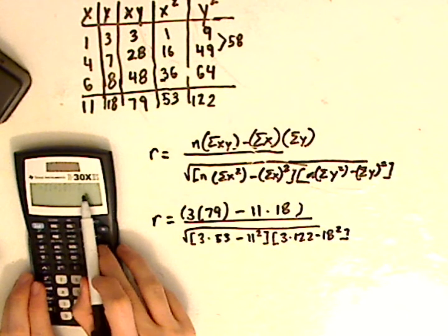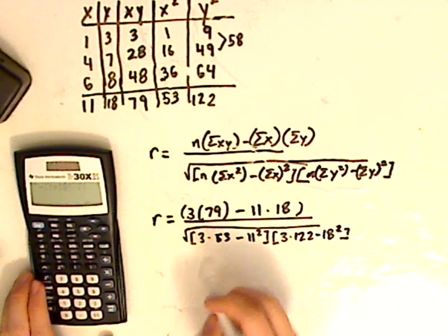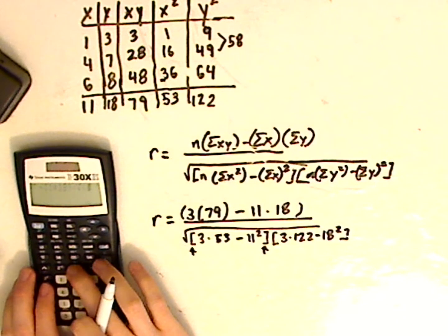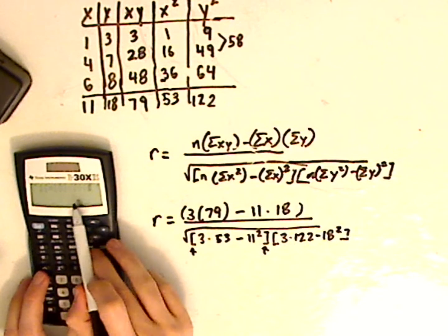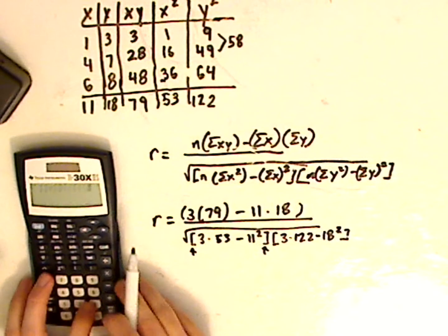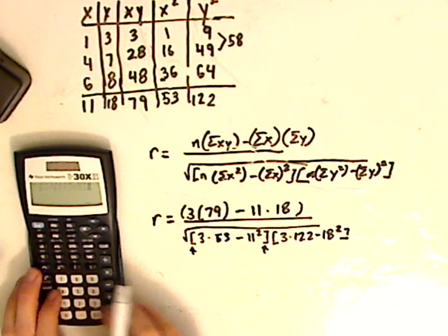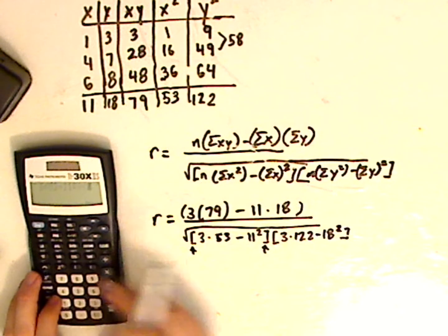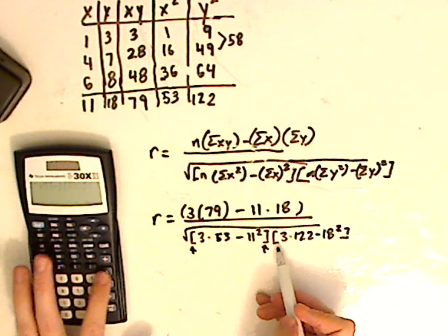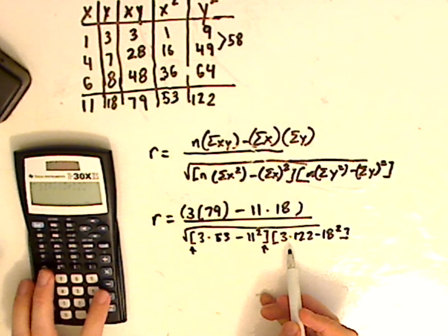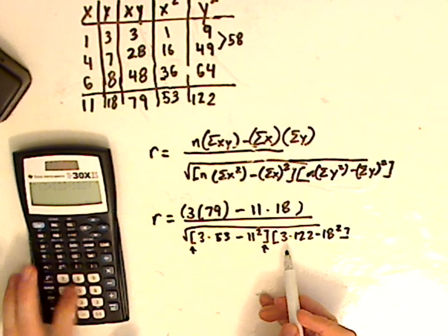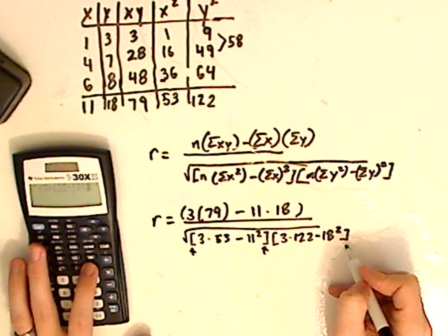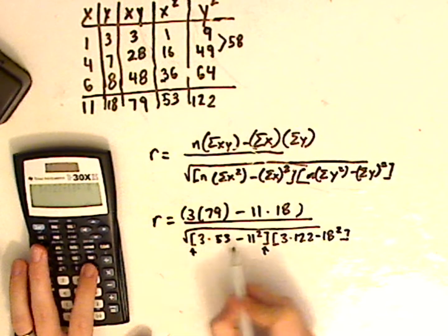Divided by square root. And with some calculators, it opens up the square root using parentheses. Now you would also have to use a second batch of parentheses. So I'm going to open parentheses again. So that square root, parentheses, and then parentheses, 3 times 53, minus 11 squared, close parentheses, open parentheses, 3 times 122, minus 18 squared. And then this would be a parenthesis in the calculator again. And then another parenthesis to close the square root.